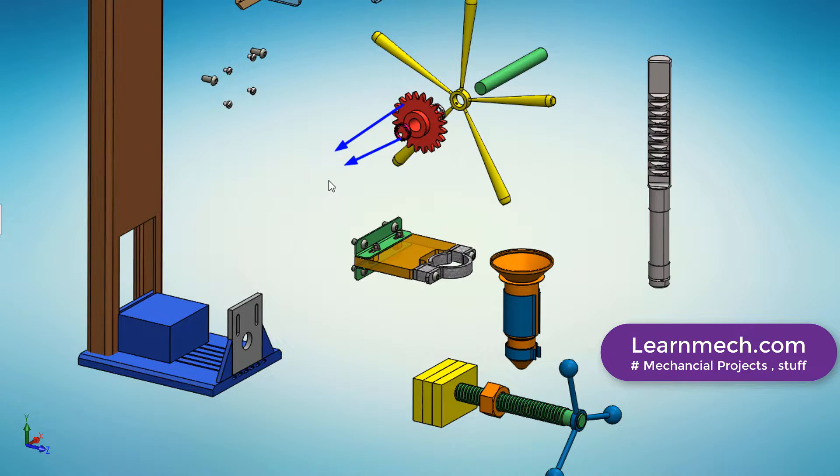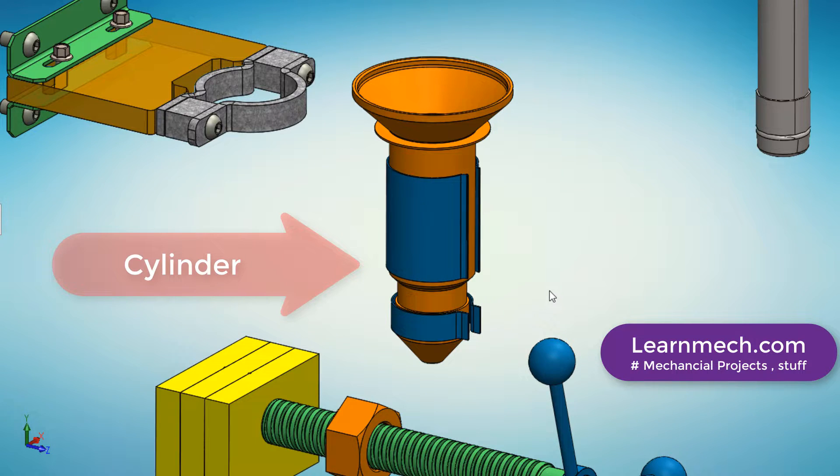Further, the subassembly is attached with the frame using nut and bolt. The cylinder is made up of mild steel. It has a hole throughout.